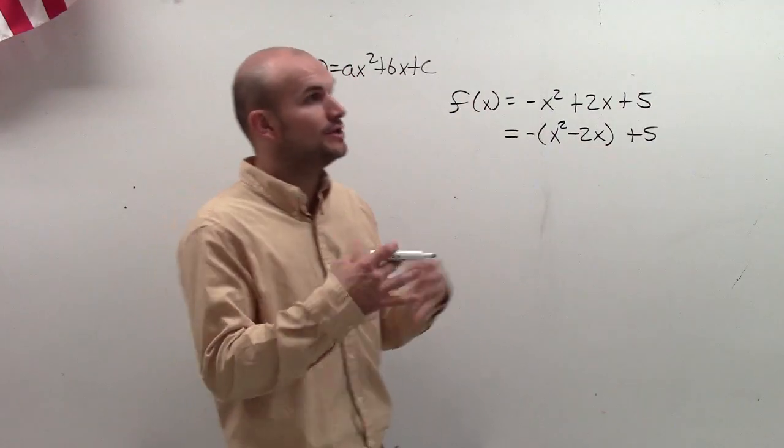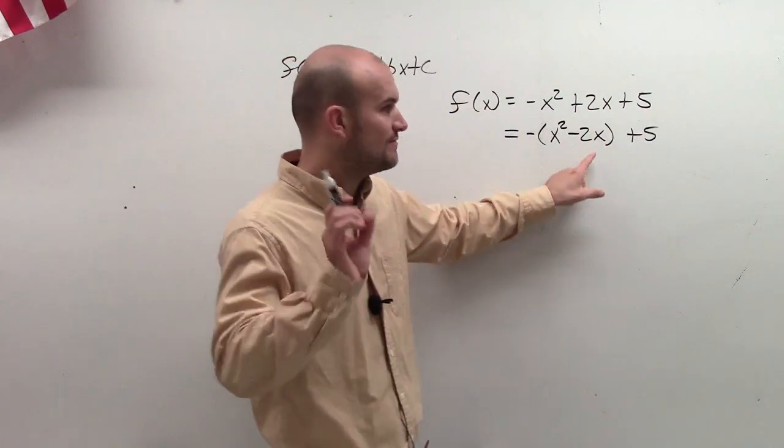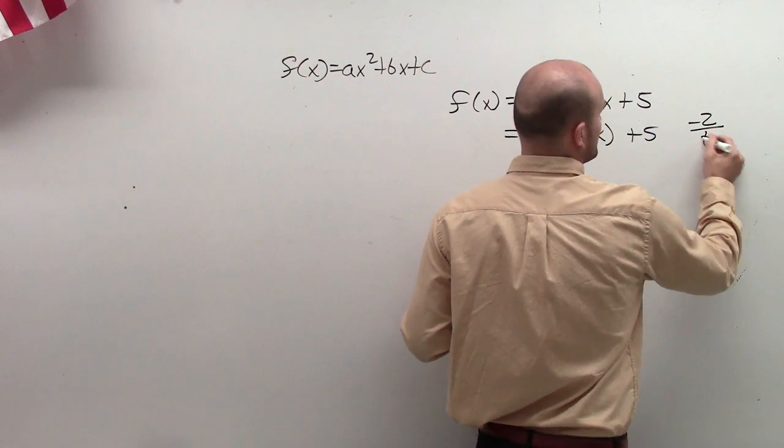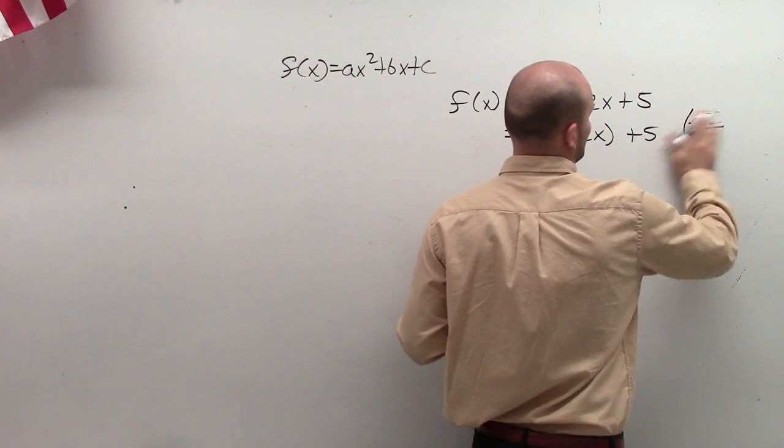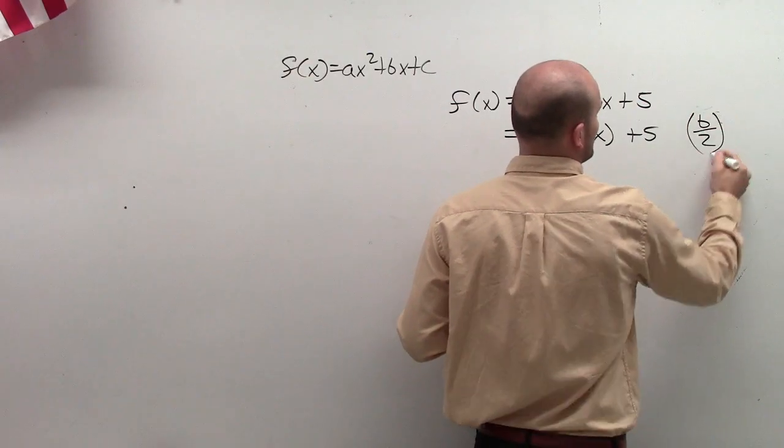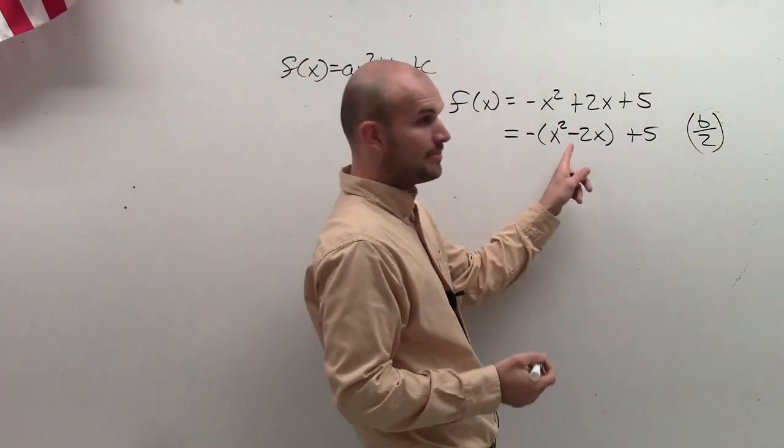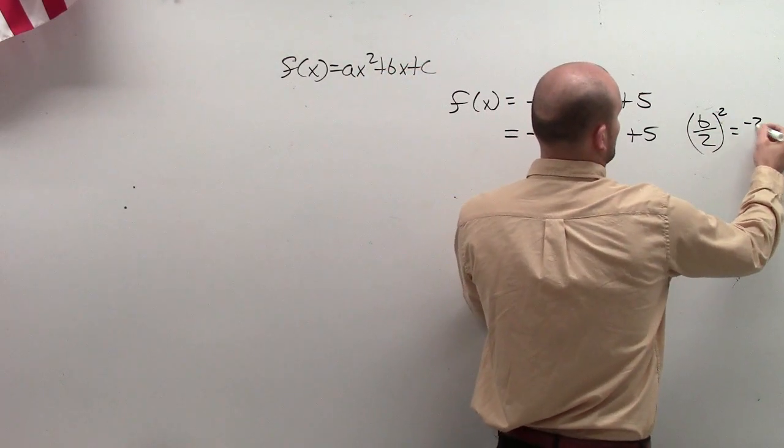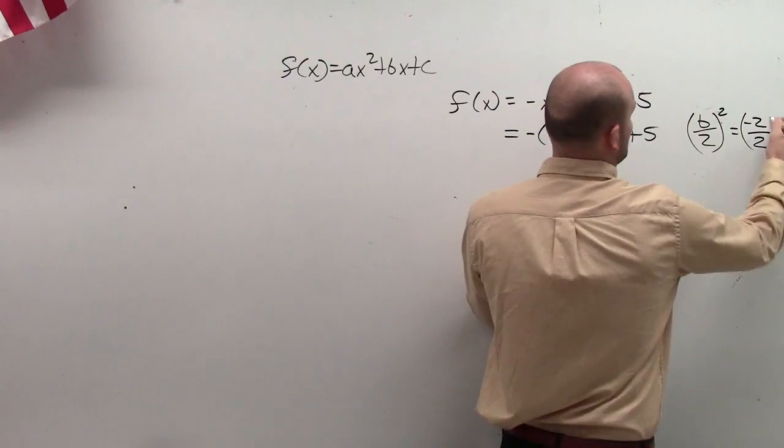So for this problem, our b is negative 2. Negative 2 divided by 2 squared. Negative 2 divided by 2 is negative 1, negative 1 squared is 1.